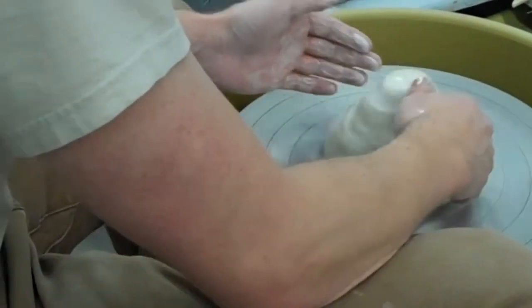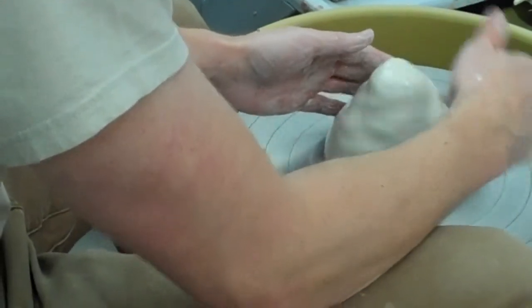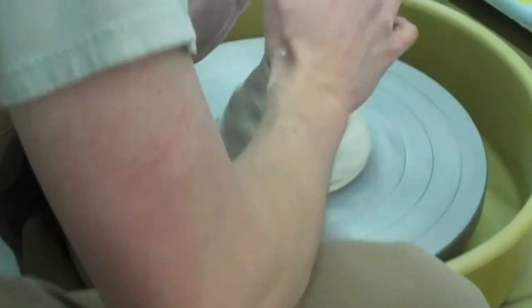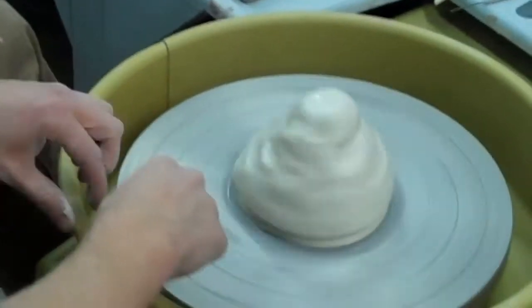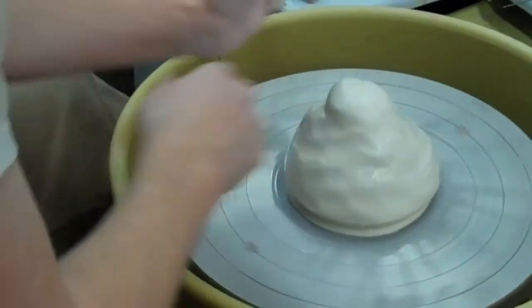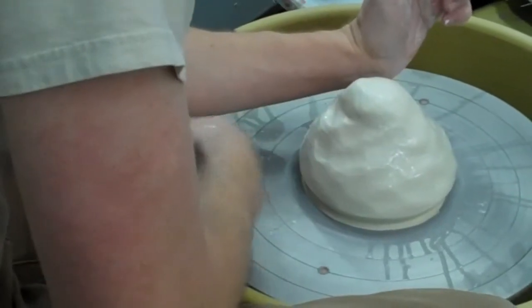Now you want to get this centered. The idea here is that we're making something round. Important: elbows down, so you're braced on your legs. If that doesn't work, if your legs are too short, you can brace on the side of your splash band here.